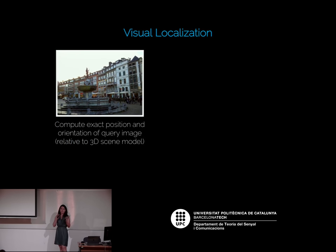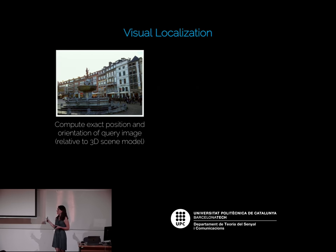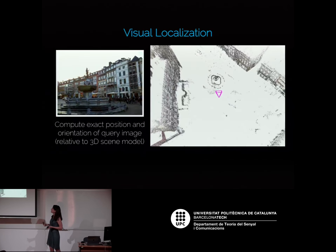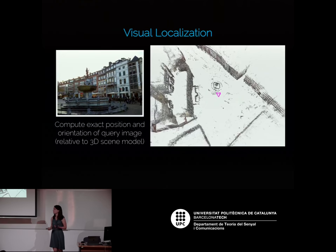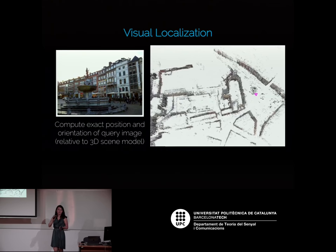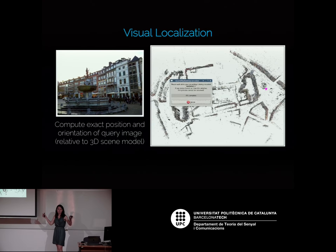Let me first explain what the task is about. We have a query image, and we don't just want to retrieve similar images and approximate where it was taken — we actually want to compute the exact position and orientation of the camera relative to a 3D scene model, which can be a city or a building. The black points are the reconstructed points of the city, and the pink triangle represents the camera with its position and orientation.